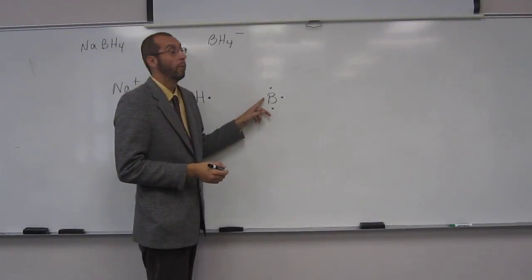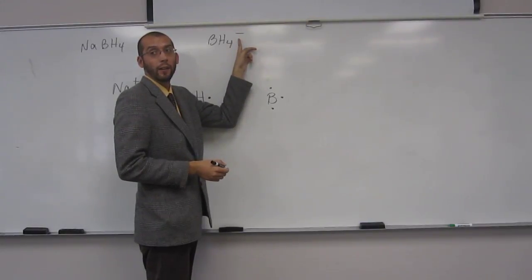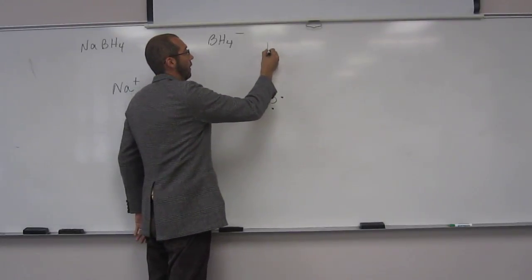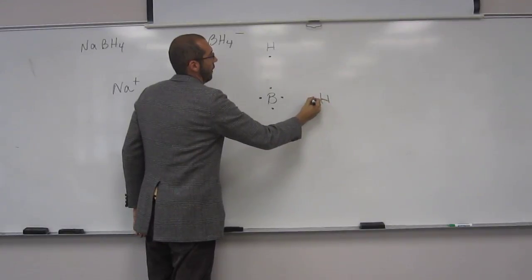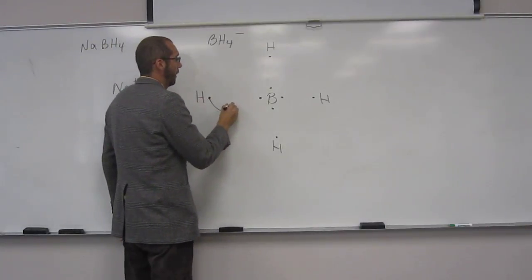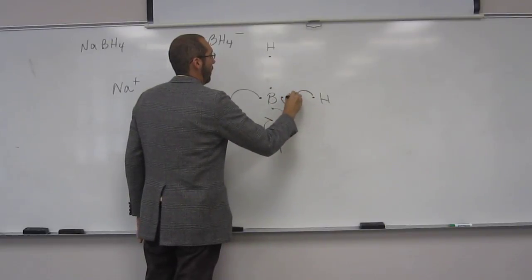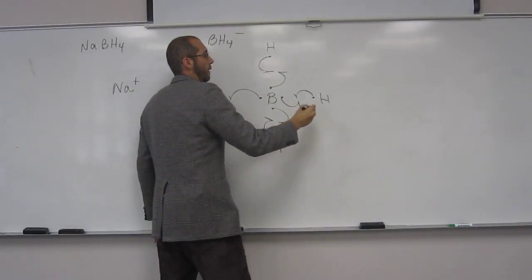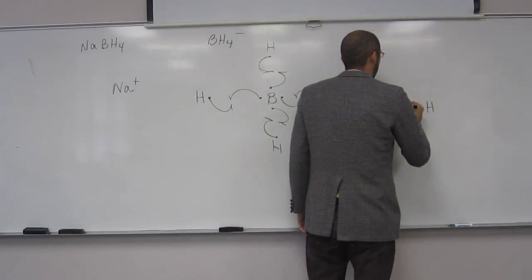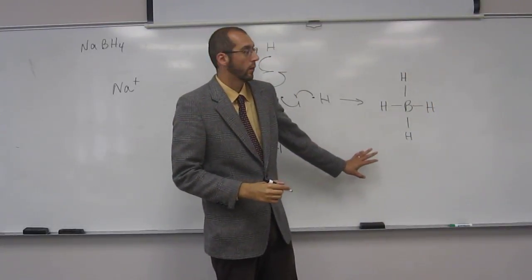So here, what does this negative charge tell us? It's gaining another electron. So boron here can gain another electron. So we've got that sort of situation. And you don't have to do all this if you can do it on your own without drawing all those valence electrons.